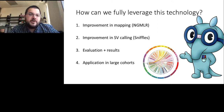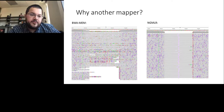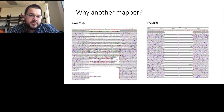The first question I'm always asked before developing new methods is: do we actually need them? Why another mapper when we already have so many? Here I'm showing an IGV screenshot of BWA-MEM, which is among the standard mappers for long reads. We can see different reads plotted as gray lines, with a lot of noise — colors representing substitutions, purple for insertions, and black lines for short deletions. We kind of wonder what is really going on in this region.